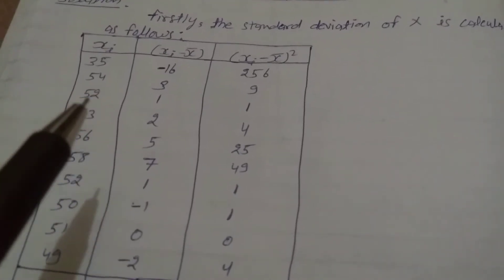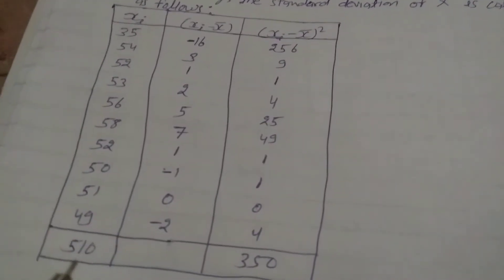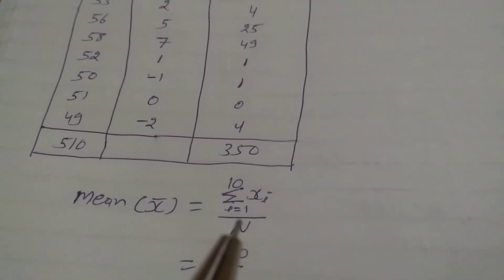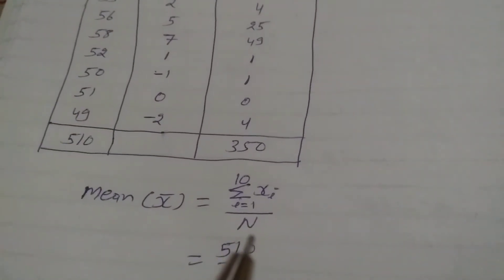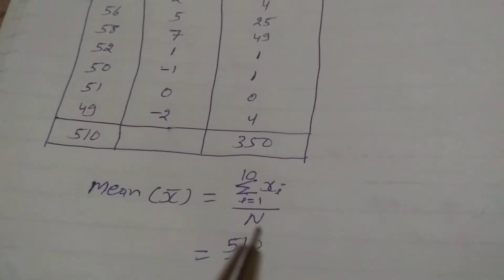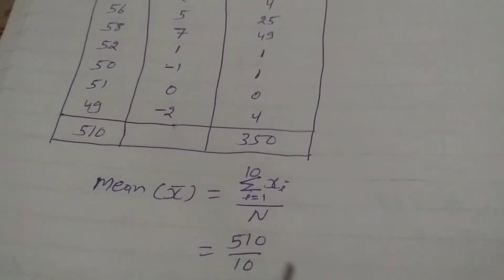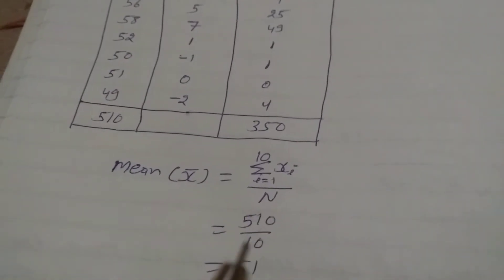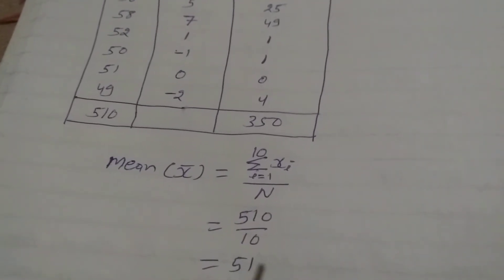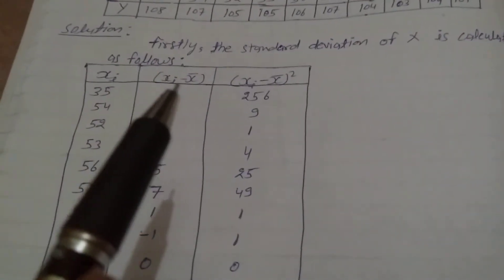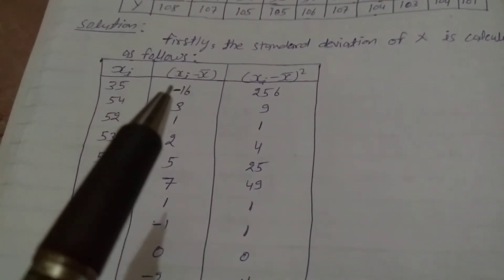Xi values are 35, 54, 52, 53, 56, 58, 52, 50, 51, 49 and their summation is 510. So mean X-bar equals summation from i=1 to 10 of Xi over capital N. Total number of observations is 10, so X-bar equals 510 upon 10, which equals 51. Now make the table for Xi minus X-bar: 35 minus 51 is minus 16.